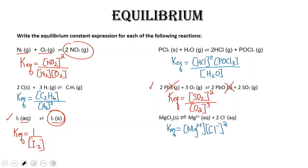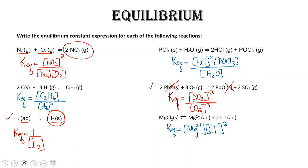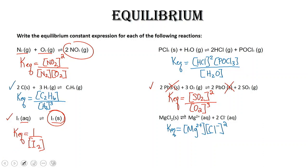Let's take a look at the problems you worked on your own. Here we have 2 moles of carbon solid plus 3 moles of hydrogen gas producing 1 mole of ethane. In our equilibrium expression, we put the concentration of our products over the reactants. Notice that we do not use carbon solid in our equilibrium expression.